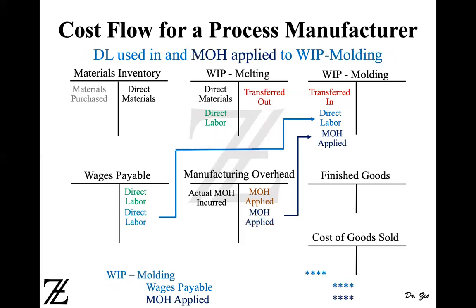Then we apply direct labor and manufacturing overhead to the molding department, same as we did for melting. For direct labor, wages payable is credited and work in process molding is debited. When we apply overhead, work in process molding is debited and MOH applied is credited. You can do two separate journal entries, or combine them into one: debit work in process molding and credit both wages payable and MOH applied together for the total amount.